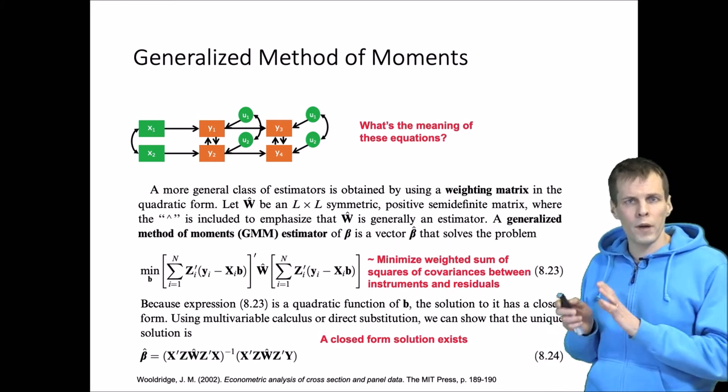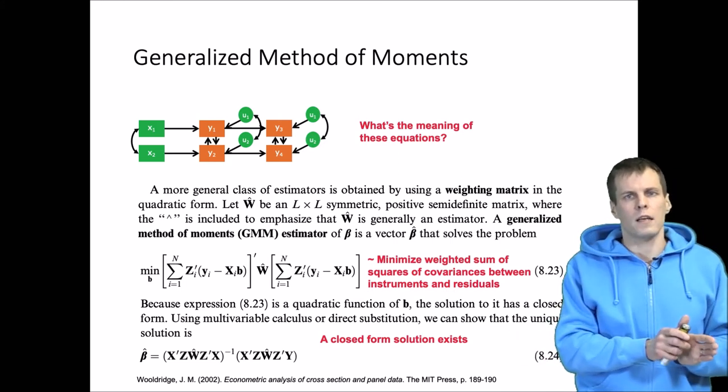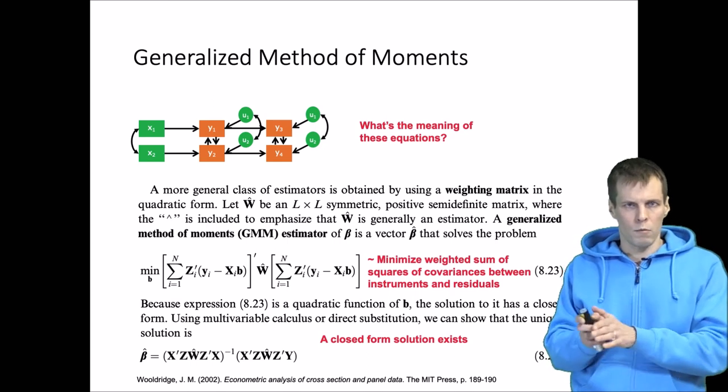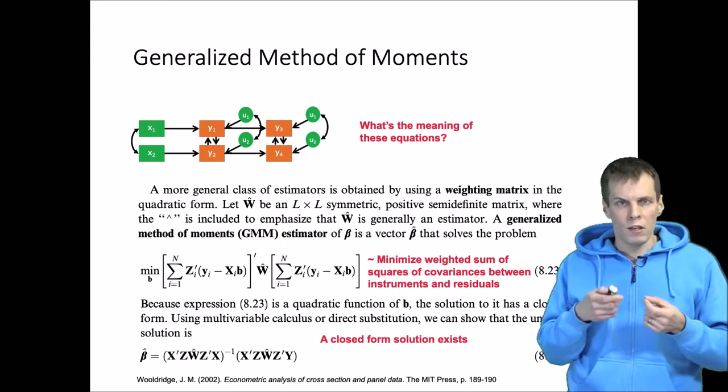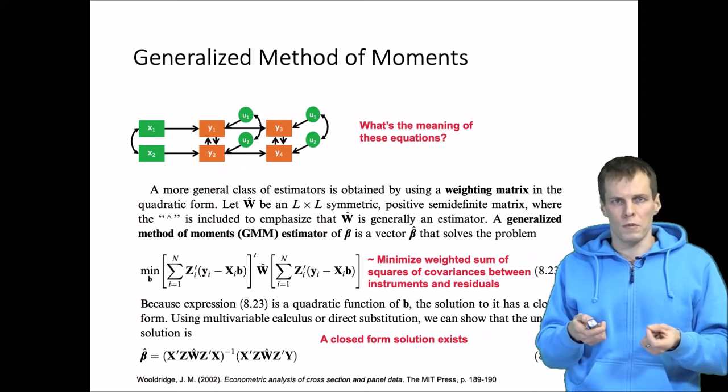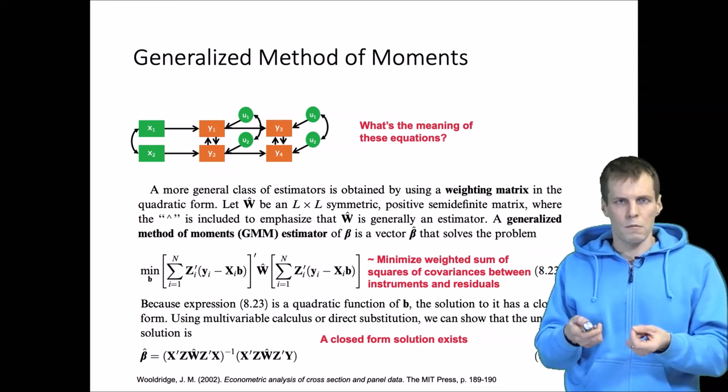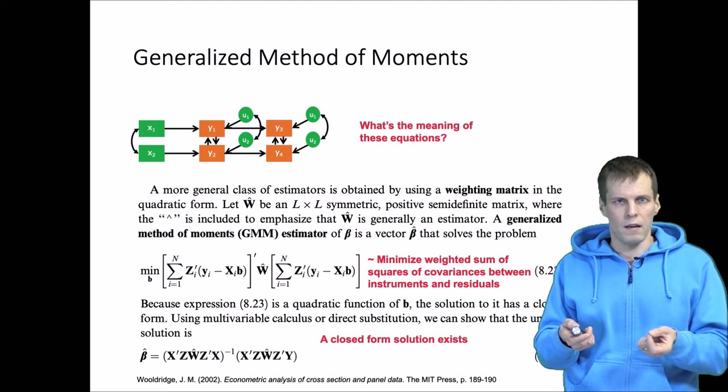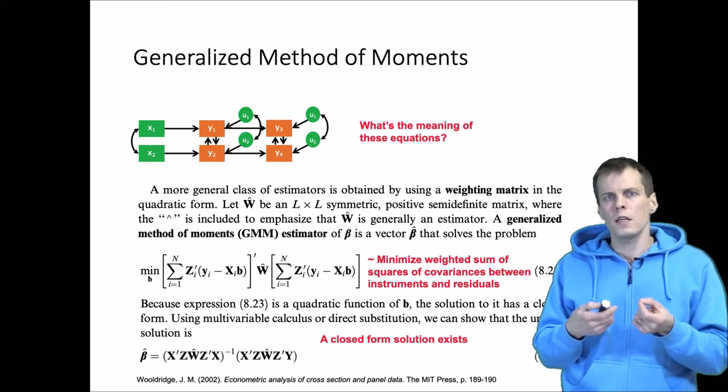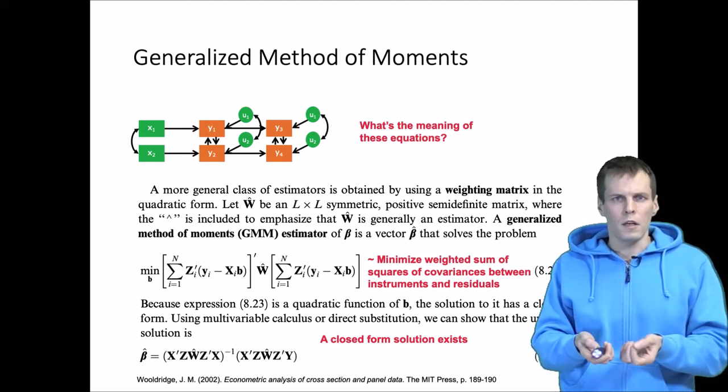If we compare generalized method of moments against another modern method—maximum likelihood—in maximum likelihood we have to iteratively find using numerical optimization the maximum of a likelihood function, and that can go wrong. There are things that can go wrong in numerical optimization.